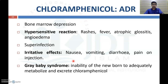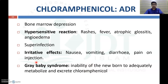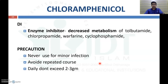Gray baby syndrome occurs when chloramphenicol is administered to a newborn. It is due to the inability of the newborn to adequately metabolize and excrete chloramphenicol. As a result, the color of the baby's body changes to gray. Because the newborn cannot metabolize chloramphenicol, it should not be used in newborns — hence the name 'gray baby syndrome.'